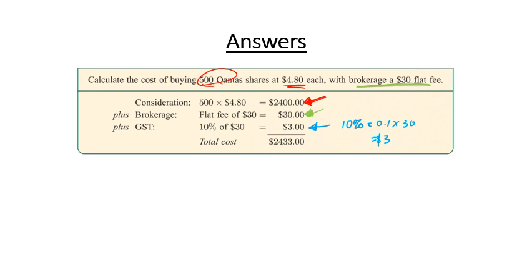So that's where we get our $3 value from. Now we add it all together, and our cost for buying 500 Qantas shares at $4.80 is actually going to be $2,433.